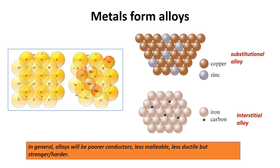Another very important property of metals is that they can form alloys. Alloys are of two types: substitutional alloys and interstitial alloys. In a substitutional alloy, one metal atom is substituted by another metal atom of similar size — for example, copper with zinc. In an interstitial alloy, a smaller element occupies the holes between the atoms — for example, carbon introduced into iron. These changes in alloy composition alter the properties of metals: alloys are poorer conductors, less malleable, less ductile, and also stronger or harder.